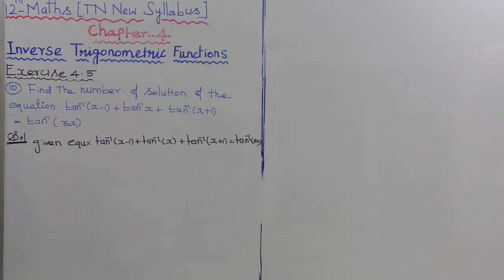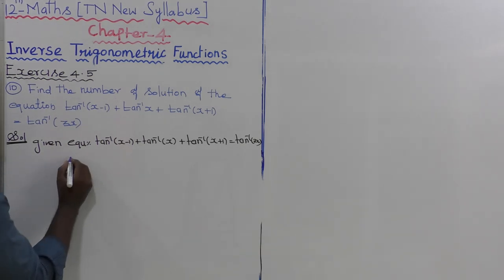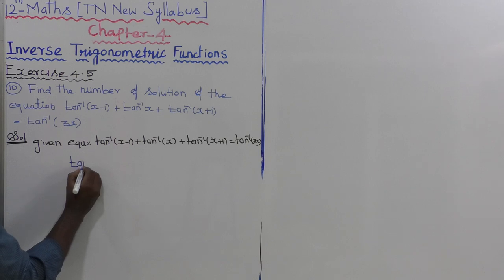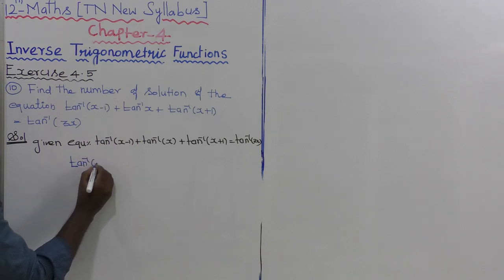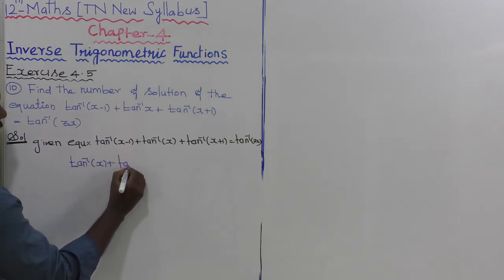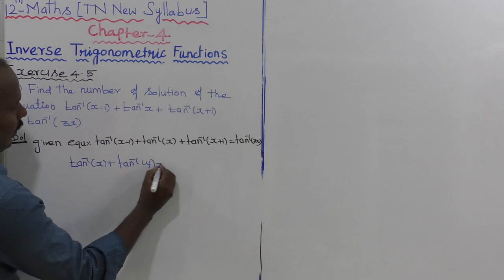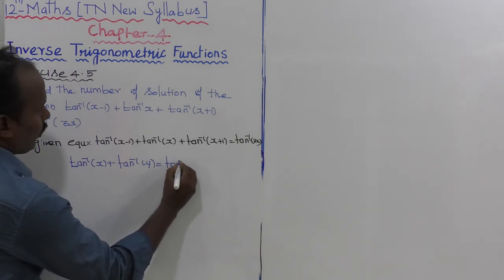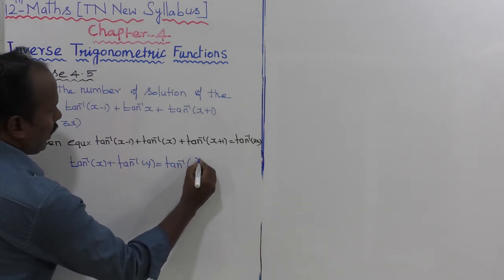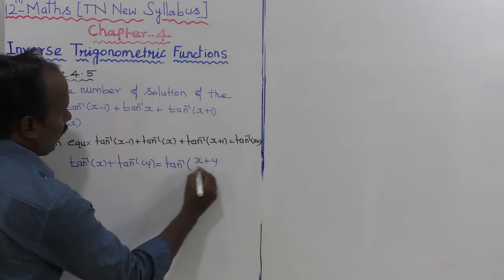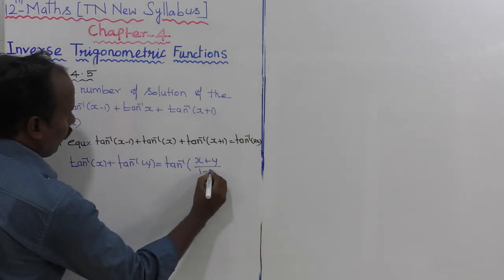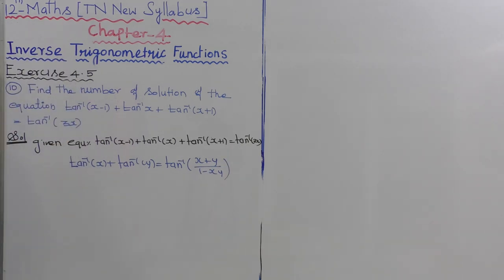By using the formula — we know that tan inverse of x plus tan inverse of y is equal to tan inverse of (x plus y) divided by (1 minus xy). We will apply this formula to solve the equation.